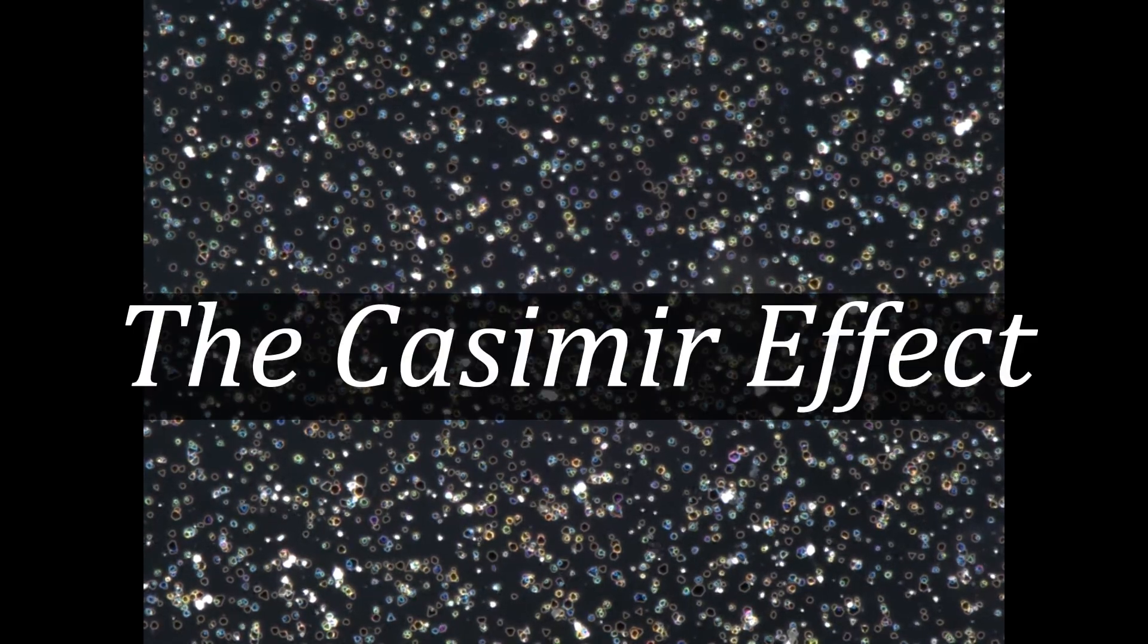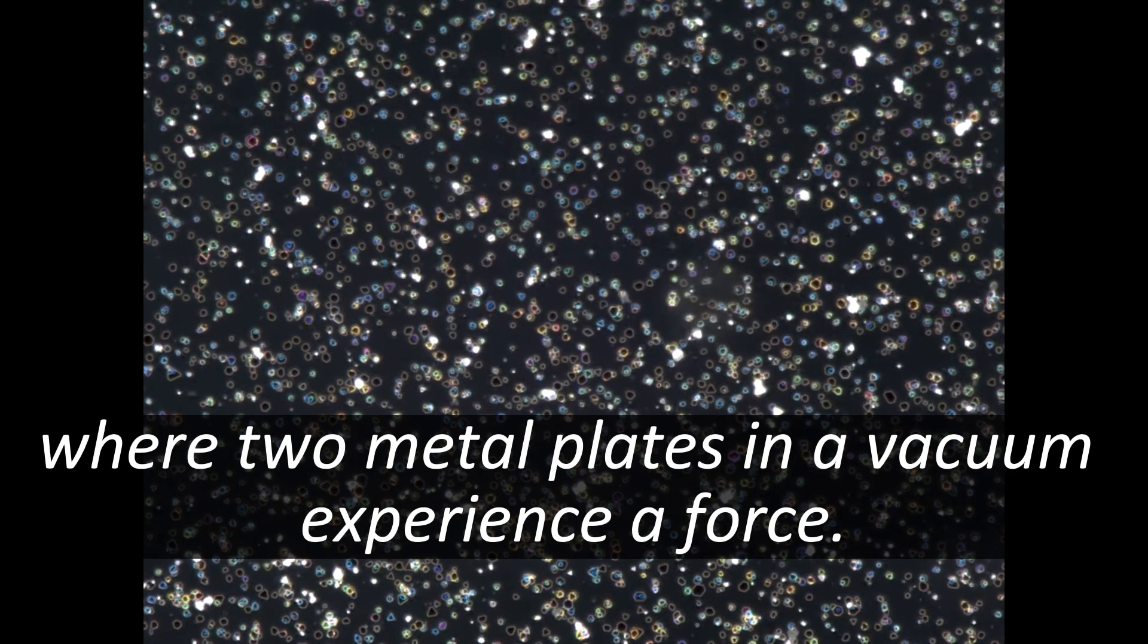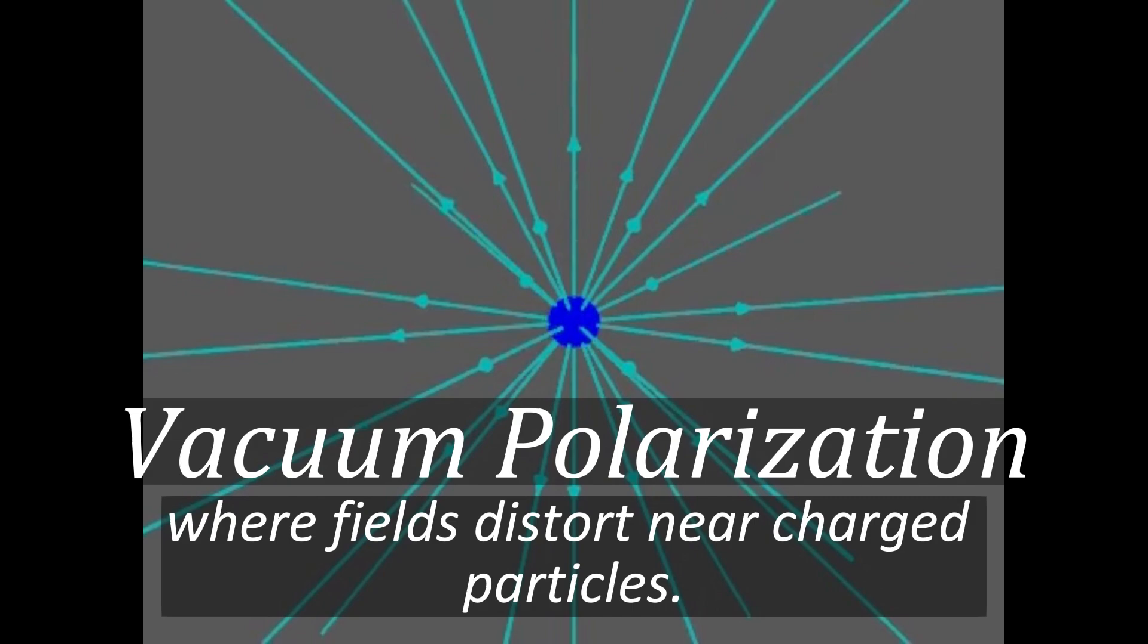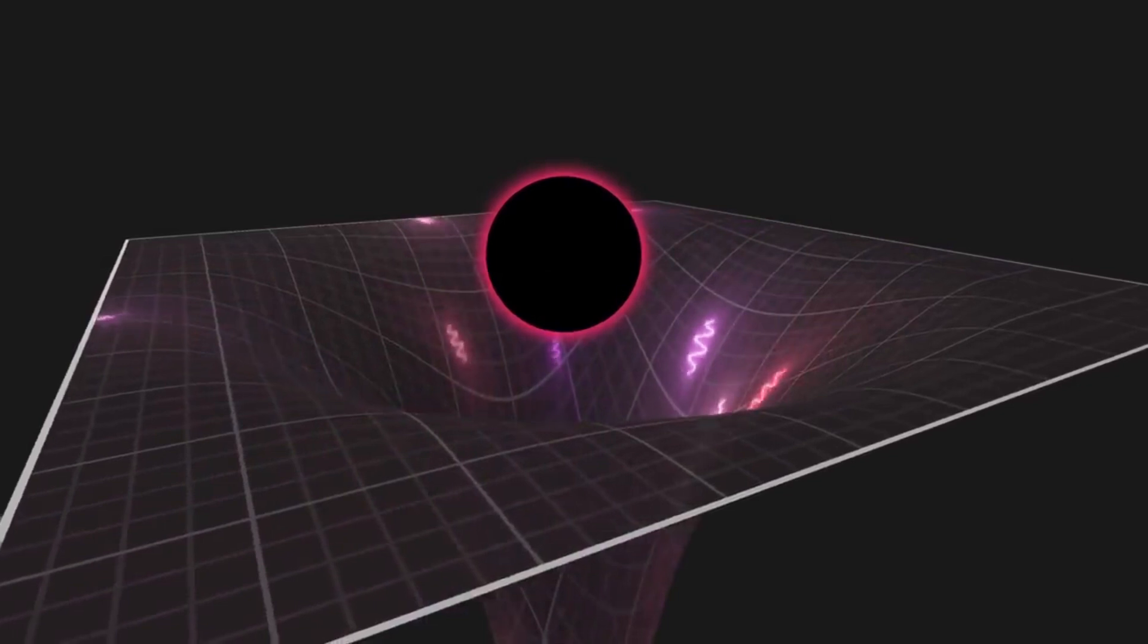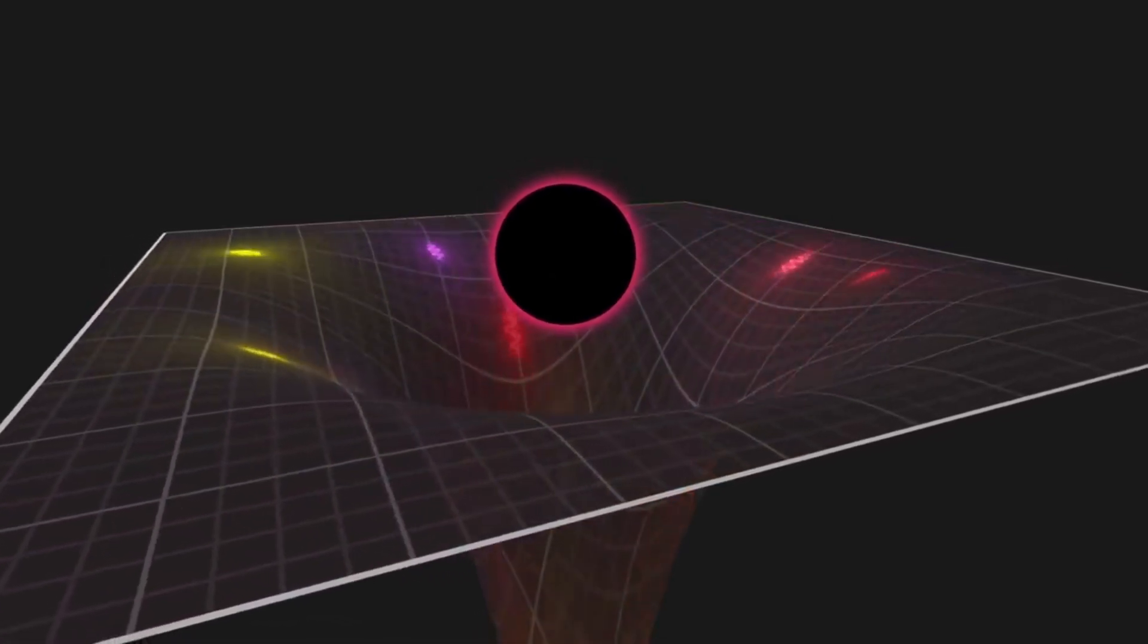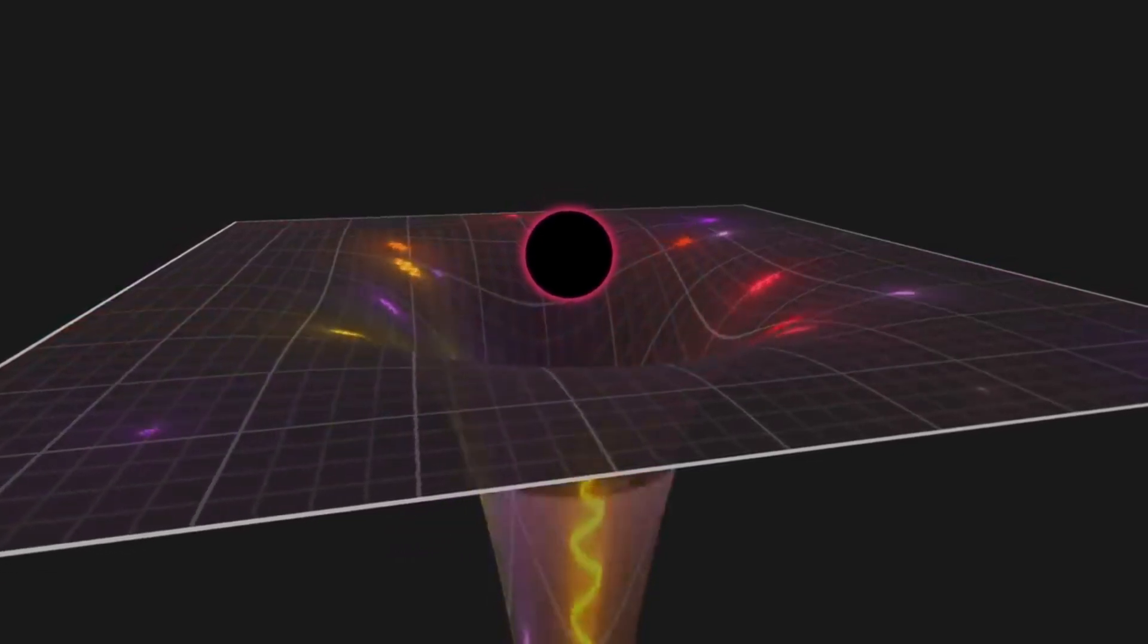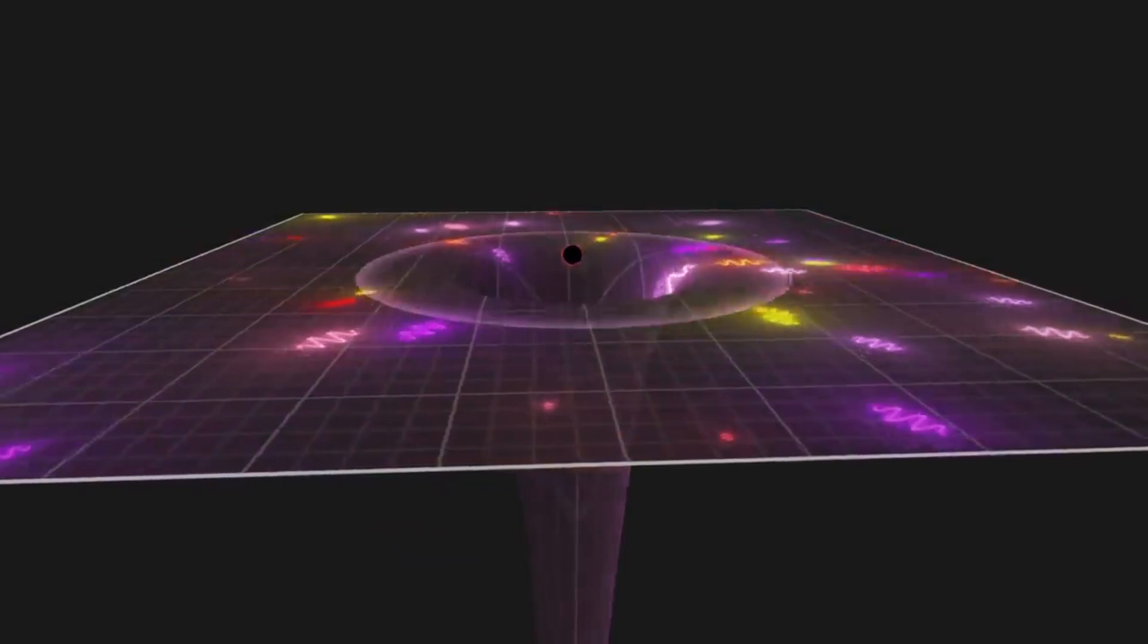This quantum activity explains the Casimir effect, where two metal plates in a vacuum experience a force. Vacuum polarization, where fields distort near charged particles. Even Hawking radiation, where quantum fields near black holes create real particles that slowly leak out energy. In short, the vacuum is alive, a sea of chattering invisible fields.